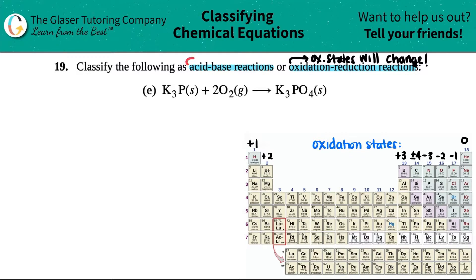On the flip side, acid-base reactions, since they're just double displacement — fancy double displacement reactions — the oxidation states or those charges don't change. So that's the main difference. Oxidation-reduction: they have to change. Acid-base reactions: they do not change. So we need to find out what the charges are for each individual element and see if it changes from reactant to product.